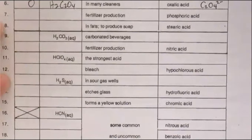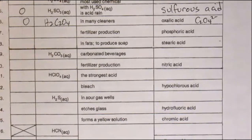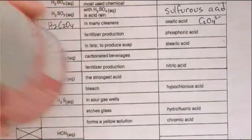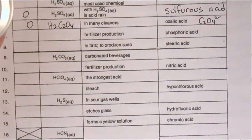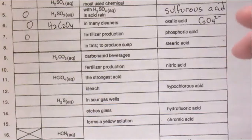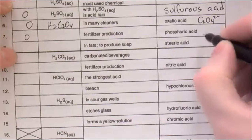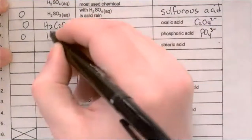Question seven: phosphoric acid is used in fertilizer production and also found in Coca-Cola. Every carbonated beverage has carbonic acid because carbonation means carbon dioxide is dissolved, making carbonic acid. But Coke also adds phosphoric acid for a little extra zip — a pleasant burning sensation. Phosphoric has no 'hydro', so it must have the phosphate ion. I've memorized phosphate is PO4 3-, so if it's three minus, the formula is H3PO4.